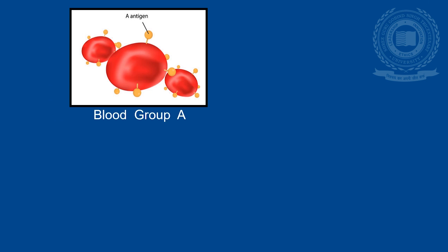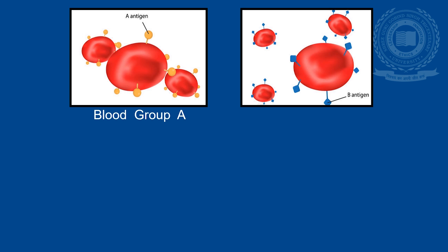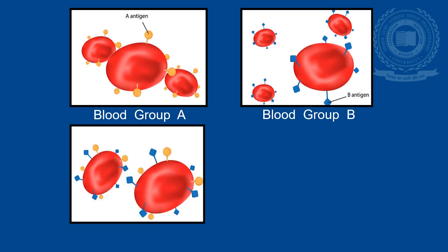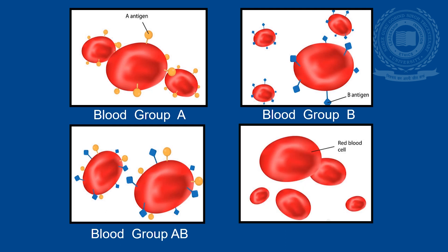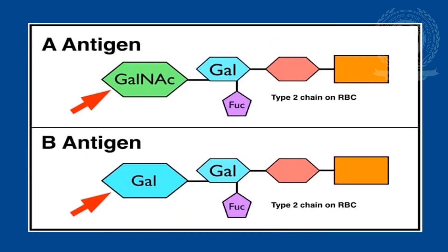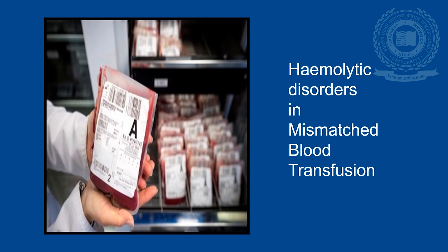In blood group A, antigen A is present. In blood group B, antigen B is present. Blood group AB has both antigens A as well as B, while blood group O has neither antigen A nor antigen B. The terminal sugar present in antigen A is N-acetyl galactosamine and in antigen B it is D-galactose.